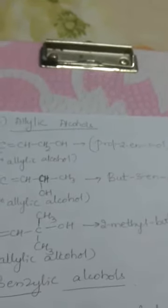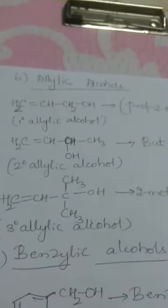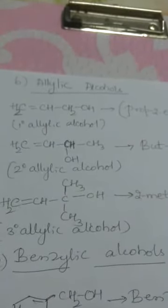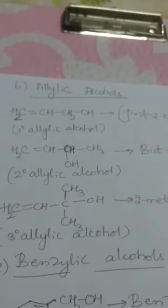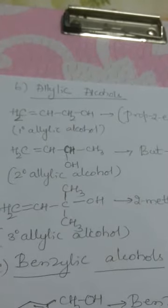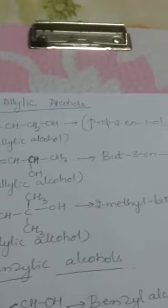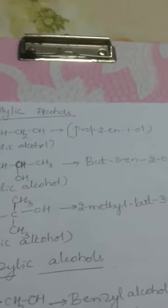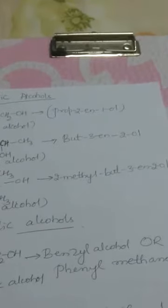You should know how to write the IUPAC name when a structure is given. For secondary allylic alcohol, the hydroxy group is bonded to the secondary carbon of the allylic group: CH₂=CH–CHOH–CH₃. Its IUPAC name is but-3-en-2-ol.